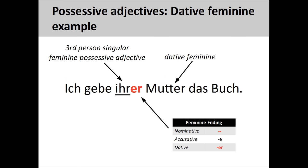We can change the root of the possessive adjective to change this relationship. 'Ich gebe ihrer Mutter das Buch' — I give the book to her mother. Although the root of the adjective changes and no longer has 'ein' in it, the adjective ending still remains the same. The following feminine noun is still singular and in the dative case. Note that there is some ambiguity, as the possessive adjective 'ihr' can also be third-person plural, which would mean 'I give the book to their mother.' In situations where the possessive adjectives are the same, you simply need to understand the meaning of the sentence from the context.